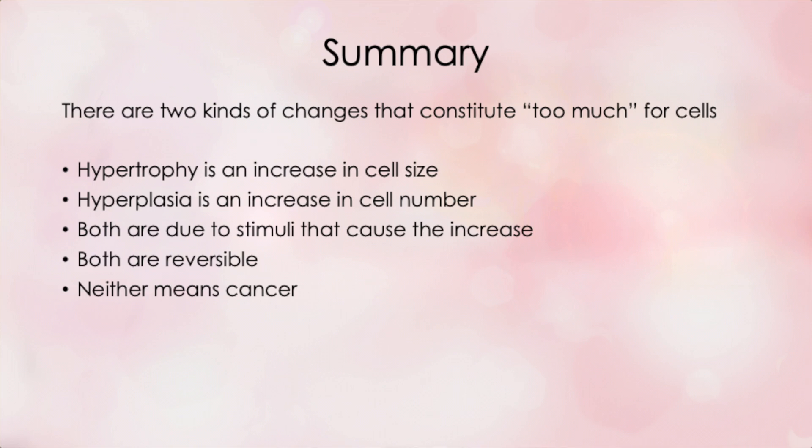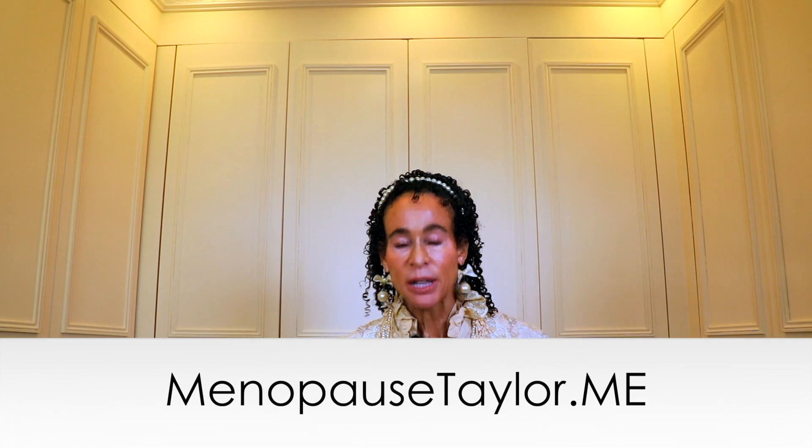So what you've learned today is that there are two kinds of changes that constitute too much for cells. Hypertrophy is an increase in cell size, and hyperplasia is an increase in cell number. Both are due to stimuli that cause the increase, both are reversible, and neither means cancer. But these are two changes you will encounter in future videos in the context of various cancers — that's why I discussed them today. Next week we'll take a look a bit further and discuss other terms pertinent to cancer. You can schedule a consultation with me at menopausetaylor.me at any time.